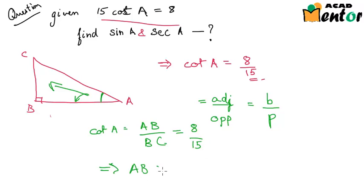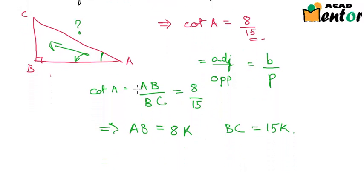If AB can be assumed as 8K, BC would take the value of 15K. So can we find out the value of AC? Yes. Again use the Pythagorean theorem, and we would have AC square as AB square plus BC square. We have assumed that AB is 8K, so this would be 8K whole square plus 15K whole square.